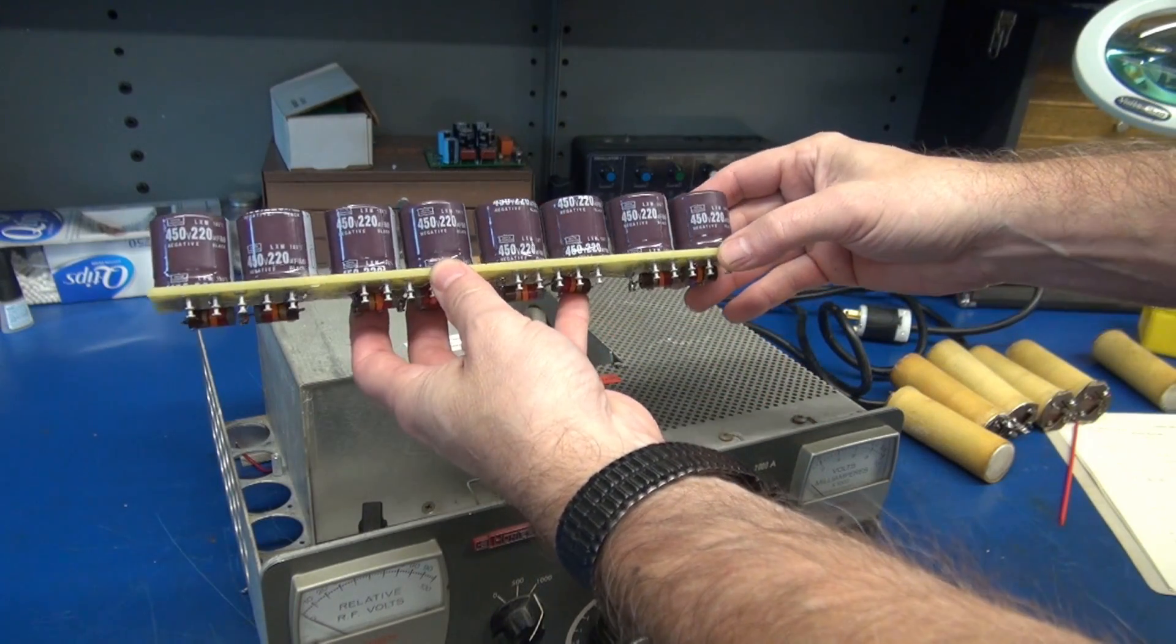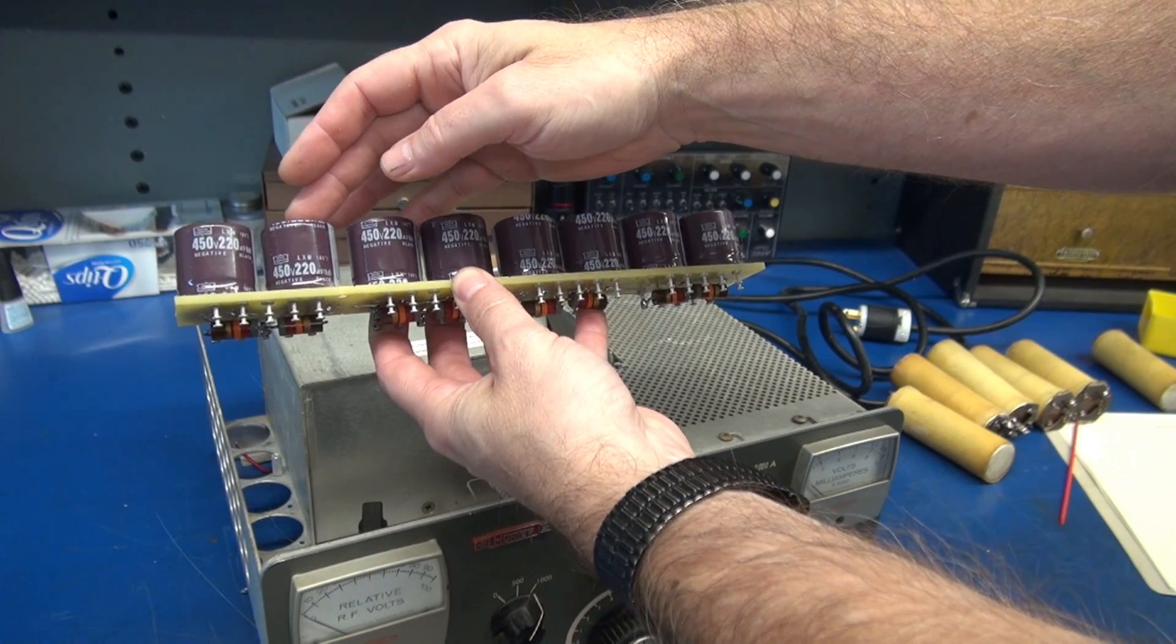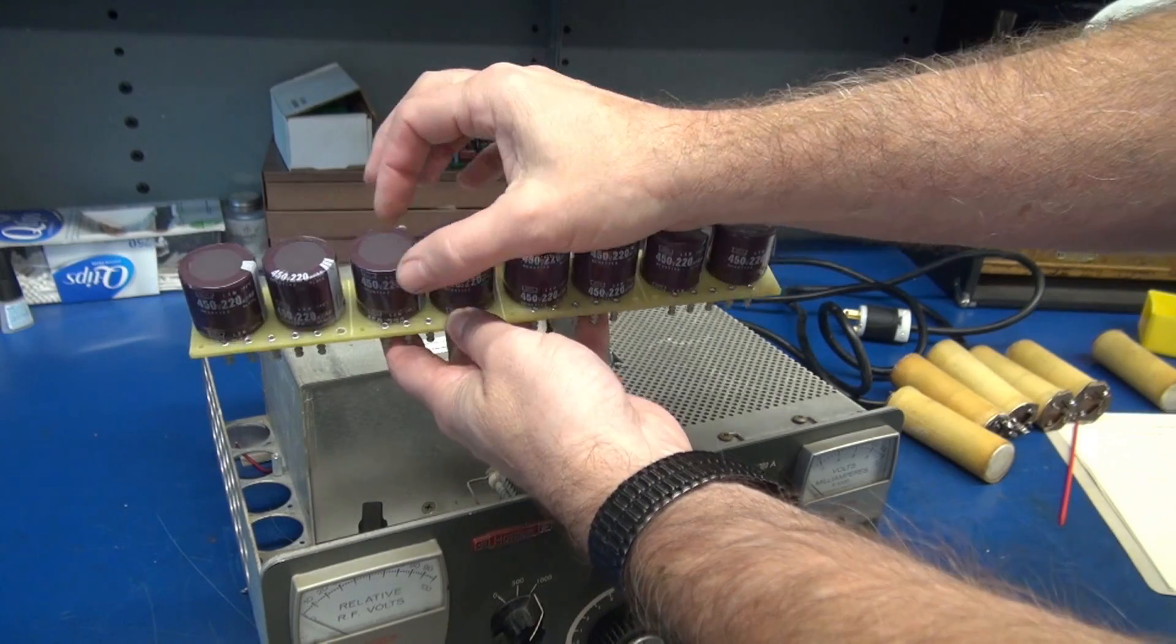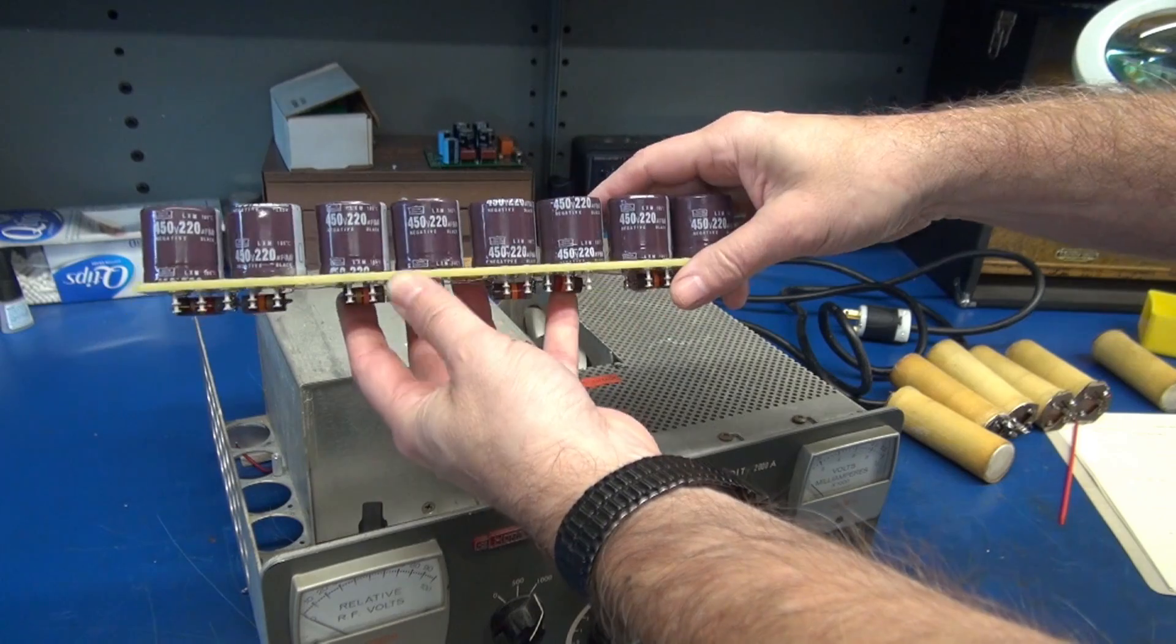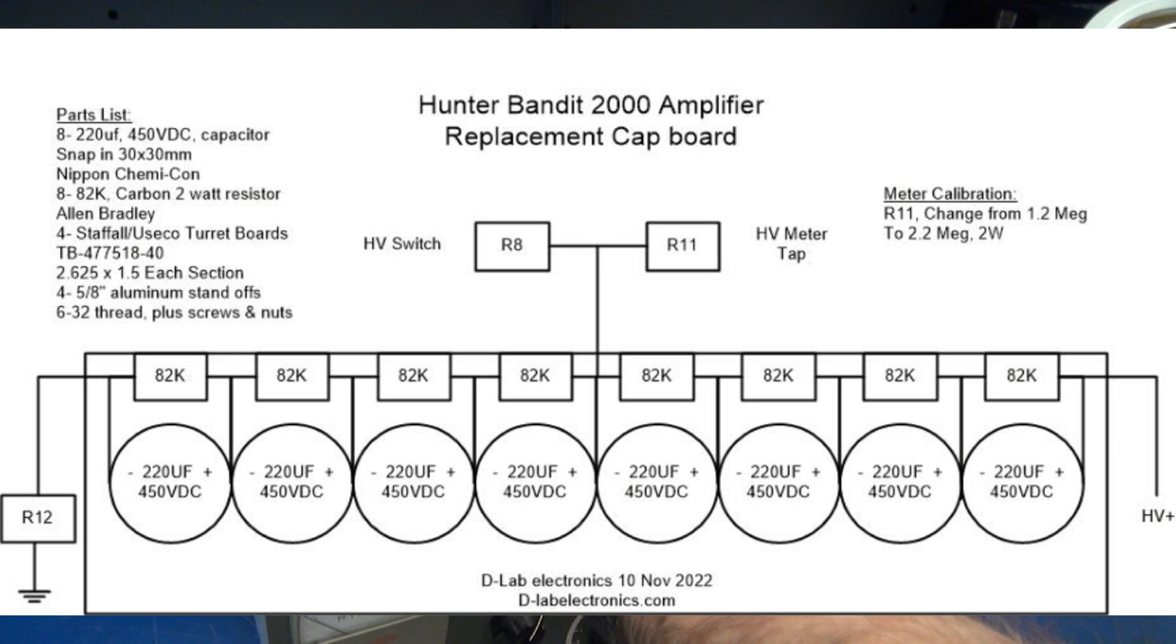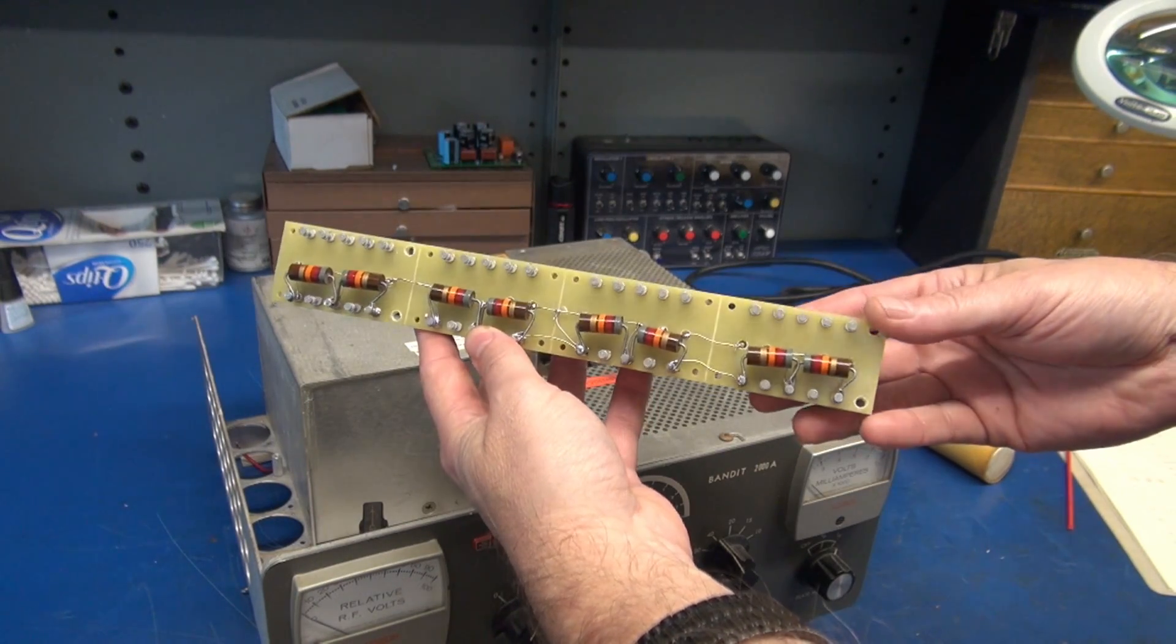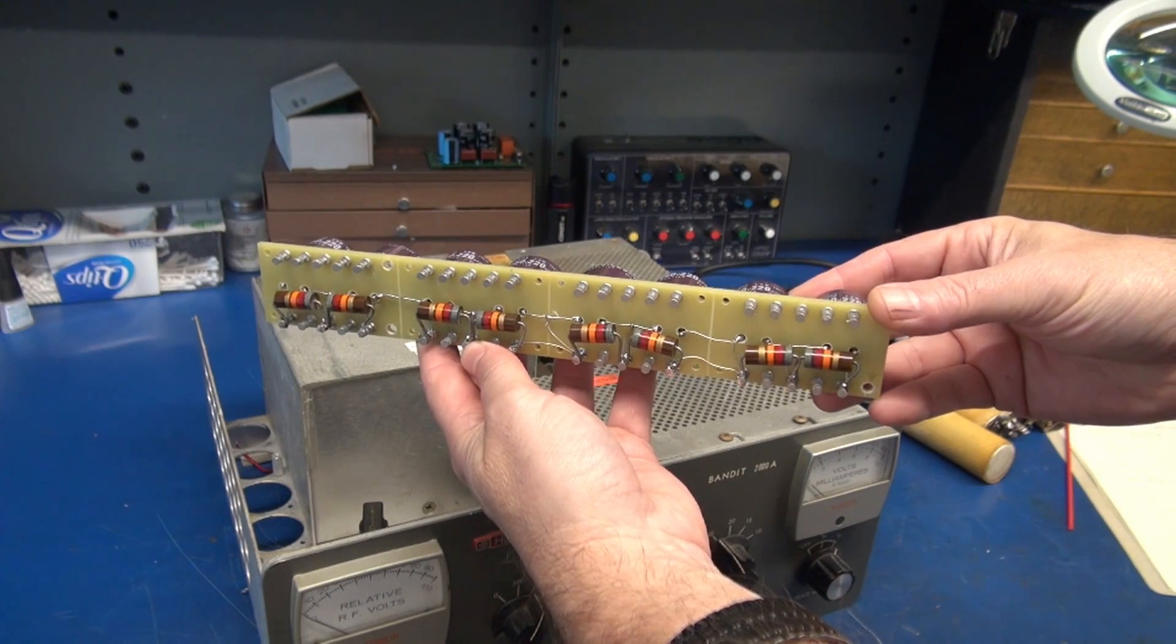Here's a close up of the new filter cap assembly. Each capacitor is a 220 microfarad at 450 volt. These are the snap in style. So they're 30 millimeter in diameter and height. You mount them on the turret board and then there's a string of 82K resistors underneath and this will wire right back in like the originals did. I'll provide you a drawing of this assembly at the end of the video and if you need a copy send me an email.